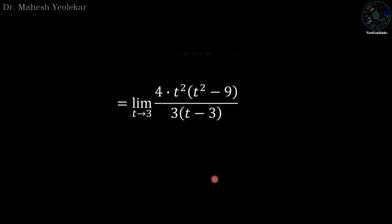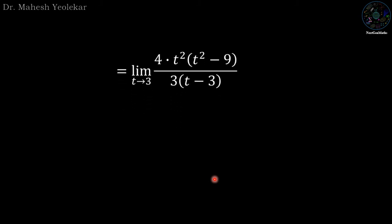Now in the numerator, t squared minus 9 factorizes to (t+3)(t-3). So from the numerator and denominator, t minus 3 cancels, and we have 4·(t+3) divided by 3.